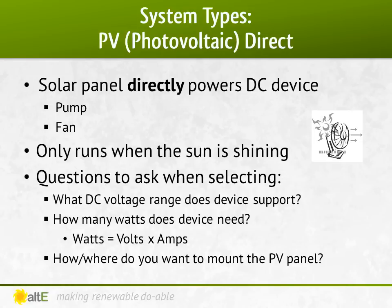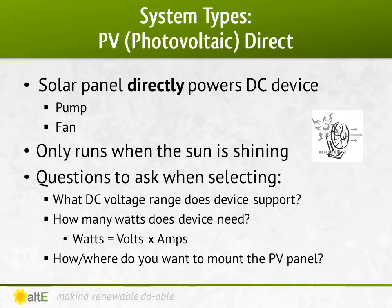The obvious advantage of a PV direct system is its simplicity. When the sun shines, the device runs. When it's not shining, the device doesn't run. It's generally fairly easy to install and you don't have the expense and hassles of batteries. When you are choosing a PV direct system, you need to determine what DC voltage the device runs on.